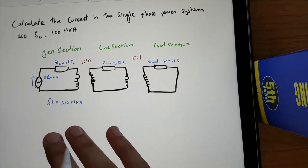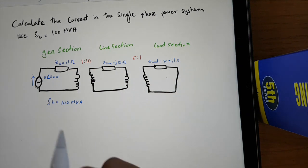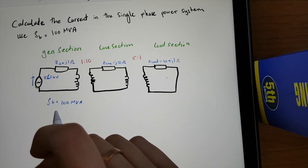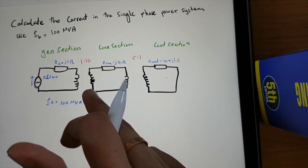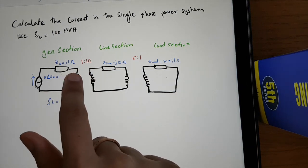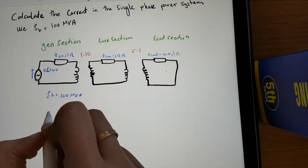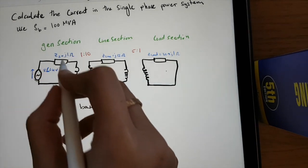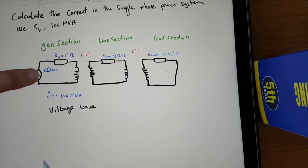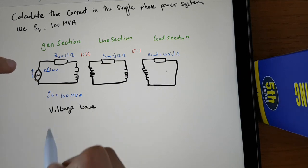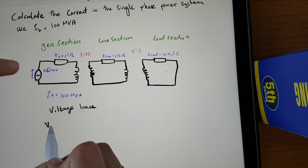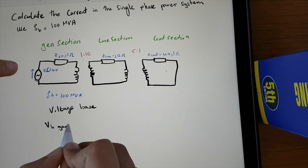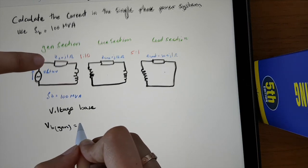All we want to do is convert everything into per unit to make our lives easier. To find the base voltages, you use the transformer ratios. The voltage base for the generator section is already given, which is 8 kV. So V_base for the generator section is 8 kV.